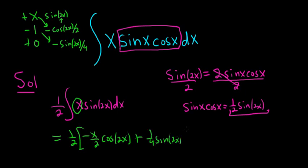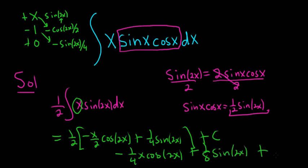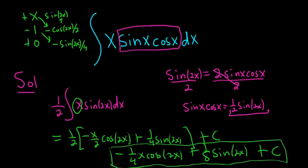And to finish, just distribute the 1 half, so we have negative 1 fourth x, cosine 2x, plus 1 eighth, sine 2x, and at the end we have the plus c. Kind of rushed through that, running out of time, but that is the final answer. I hope that made sense.